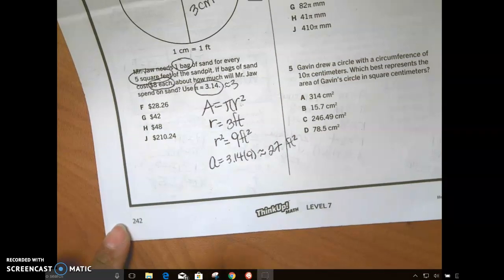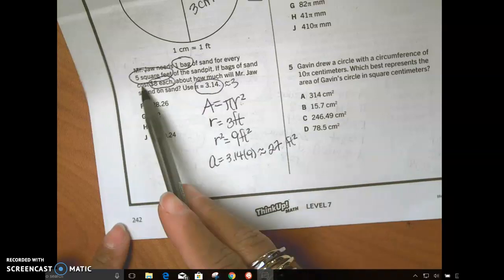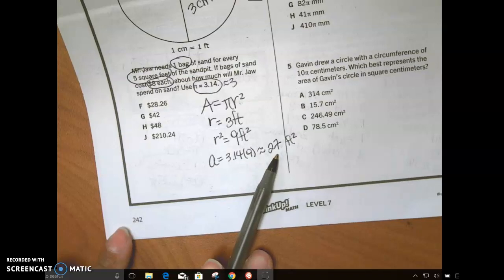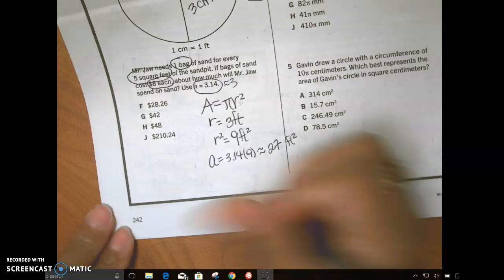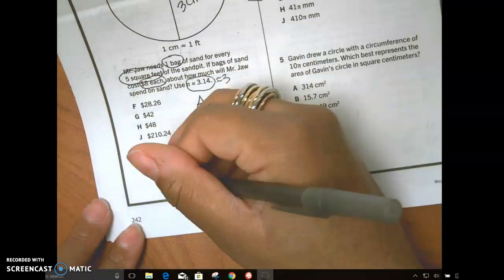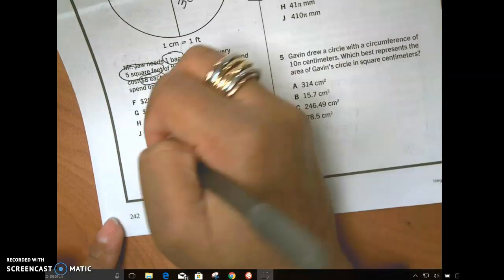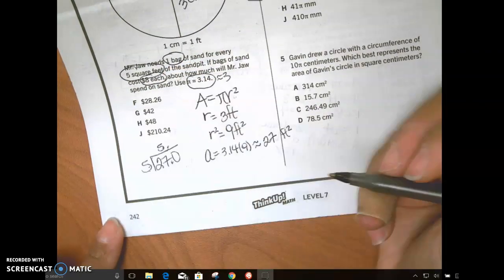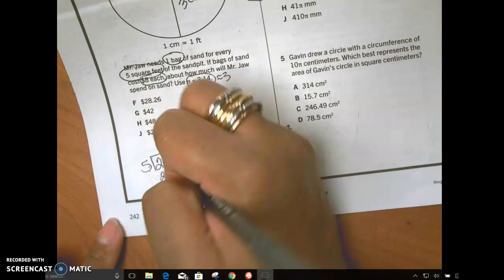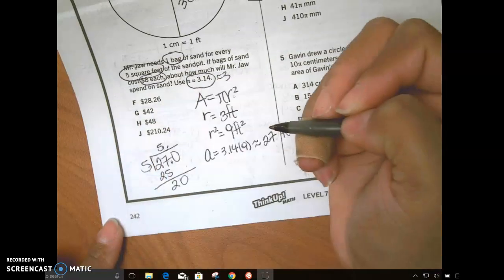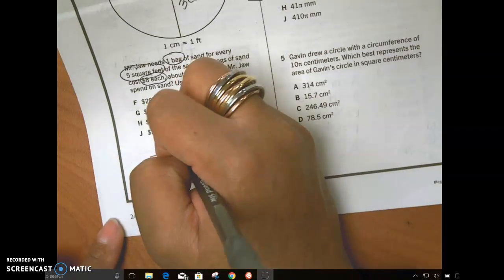So that's my square footage. Then five square feet need a bag of sand. So what am I going to do here to figure out five square feet? Divide 27 by five. 27 divided by five. Five goes into 27 how many times? Five. Five times. Five times five? Five. Seven minus five. Bring down the point four. Five point four.